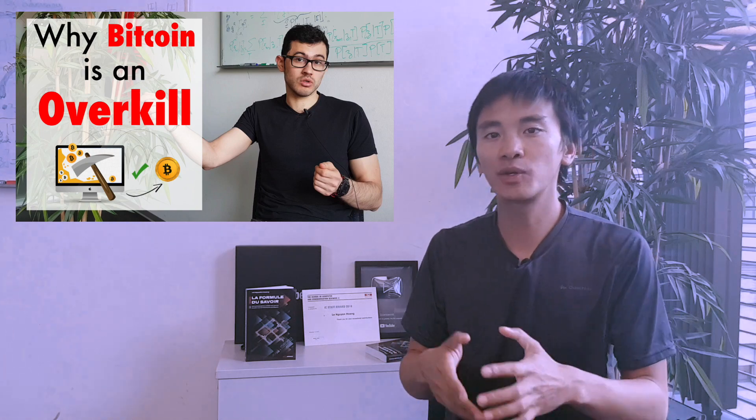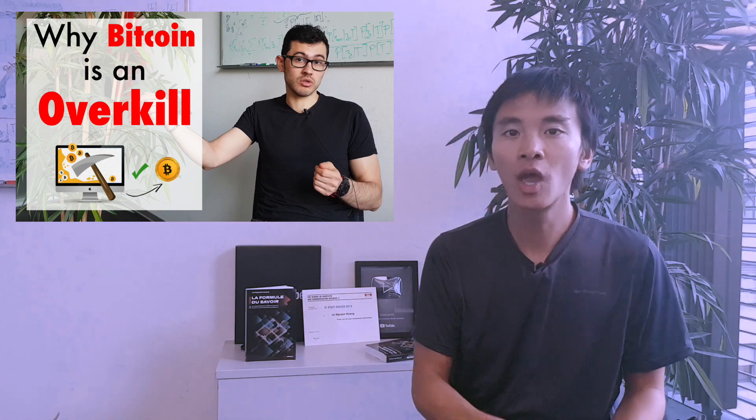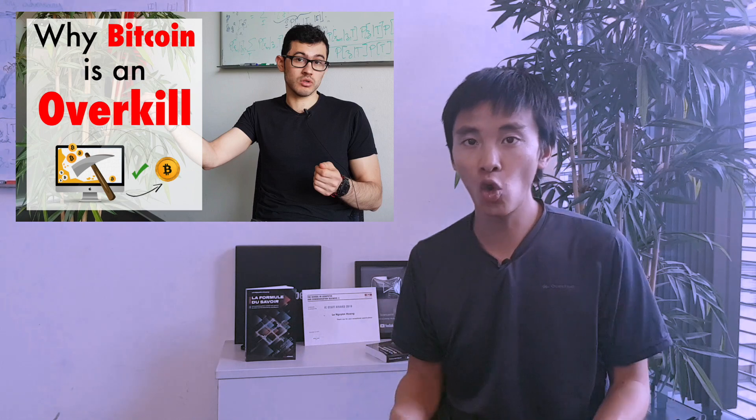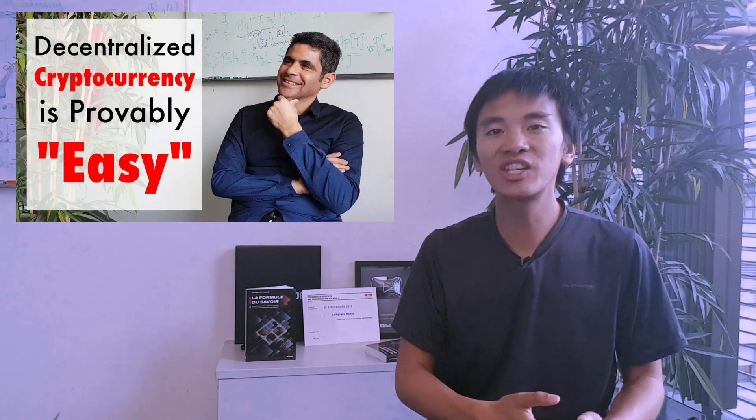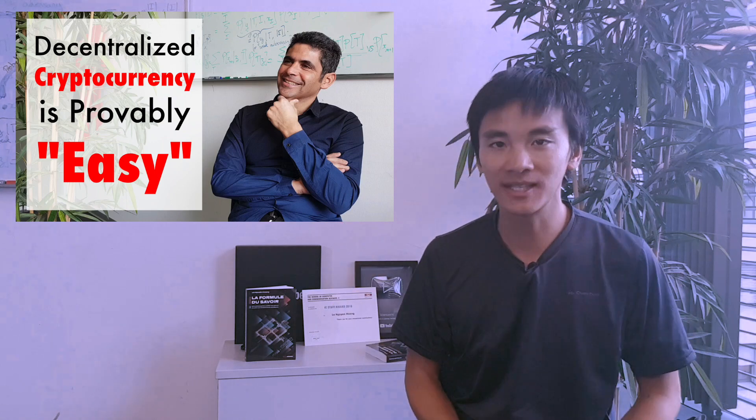In a series of previous videos with Professor Rashid Ghirawi and his PhD students, we discussed how the Bitcoin protocol was an overkill because the problem it needed to solve was actually easy in some mathematical sense.